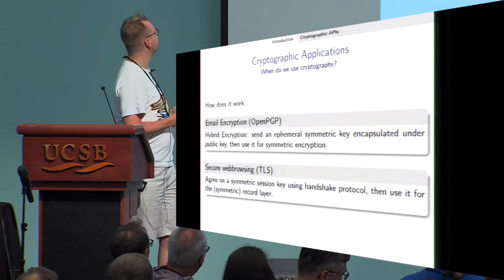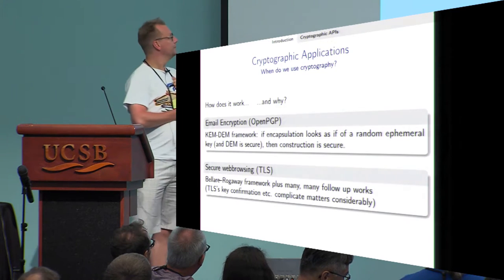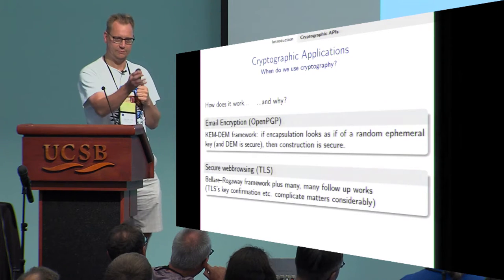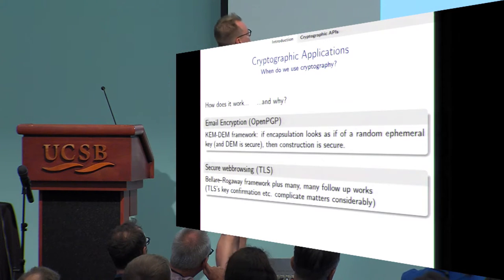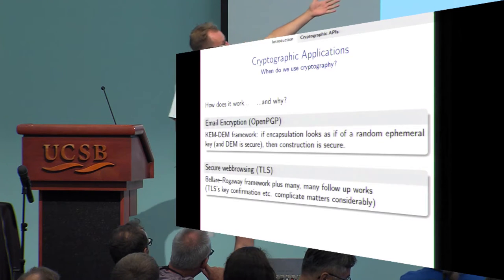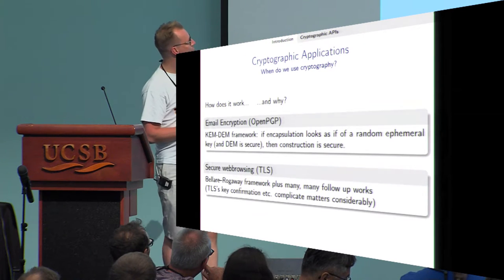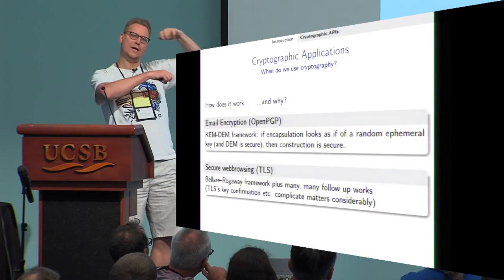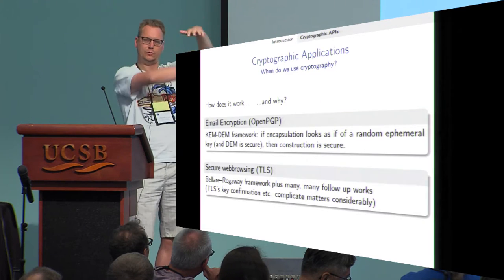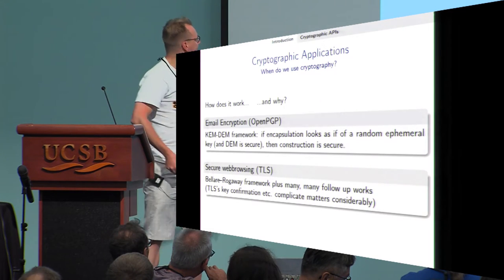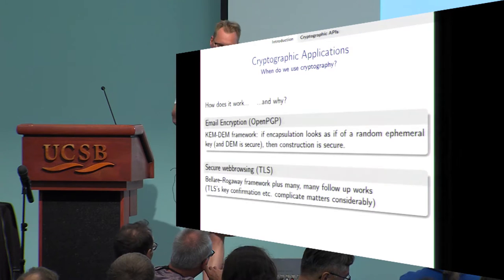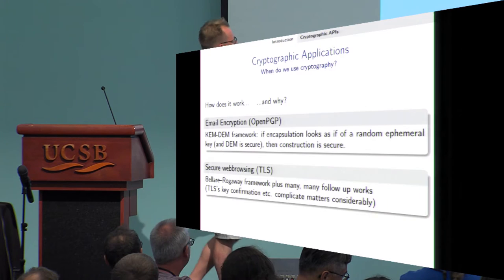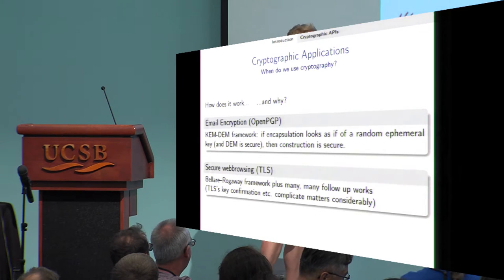The next question is: why does this work? For email encryption, there's the CAM-DAM framework due to Victor and Ronald. The key encapsulation looks as if a random ephemeral key, and it is secure — the construction is secure. There's a nice composition: this one thing is secure, the next thing is secure, and the whole thing is secure. For secure web browsing, there's a similar argument: if the handshake protocol is secure and the record layer is secure, then the whole thing is secure.